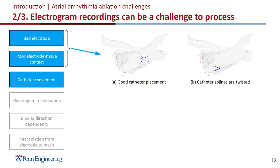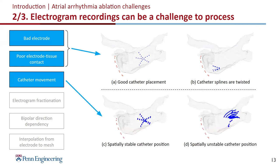The other challenge is that electrogram recordings are not easy to process. Figure A shows a good catheter placement where all splines are spread out. But in figure B, the splines are twisted and can cause electrodes to collide, creating noise. Another problem is catheter movement: figure C shows a stable catheter position during recording, held for 2.5 seconds. But in figure D, the catheter has a very large movement — the problem is it will no longer record the same location, so the recording has no meaning.